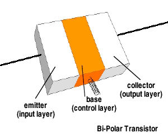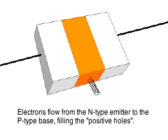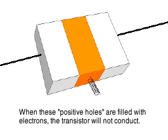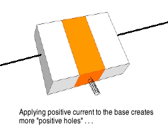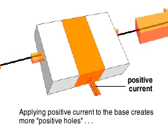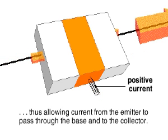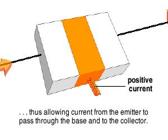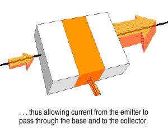When a current is applied to the emitter of an NPN transistor, electrons readily cross over to the P-type base, filling the electron holes. But when these holes are filled, the resulting negative charge repels further electrons that would come from the emitter. The transistor does not conduct. But when a small positive current is applied to the base, it will produce additional holes that will, in turn, allow more electrons to come from the emitter and pass through the base to the collector.